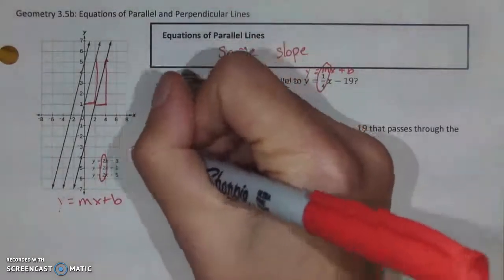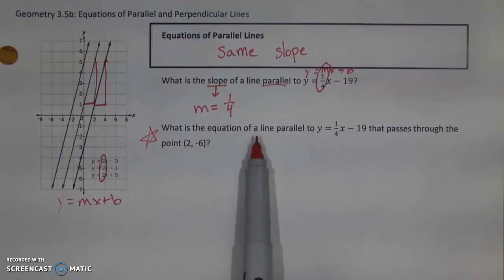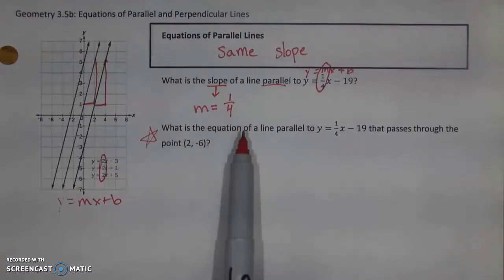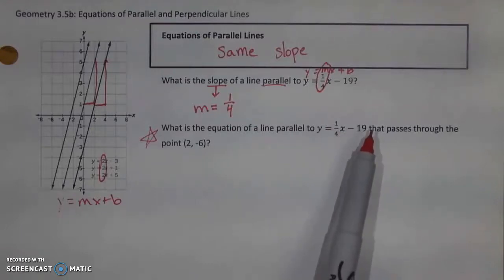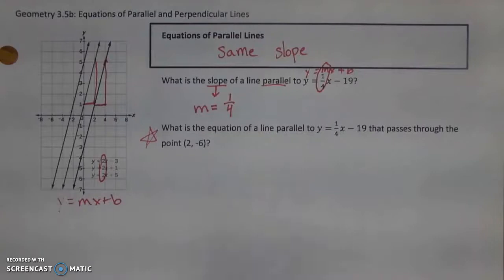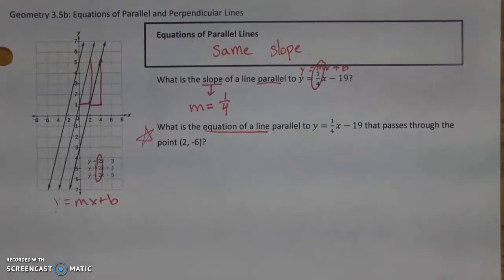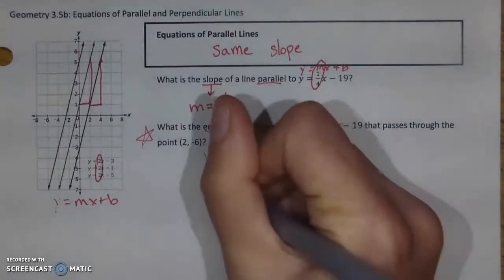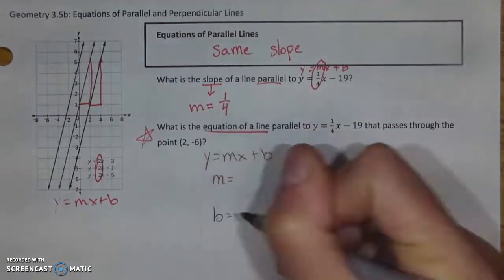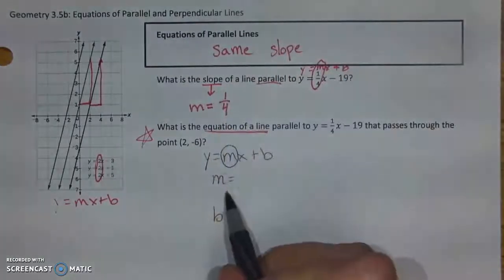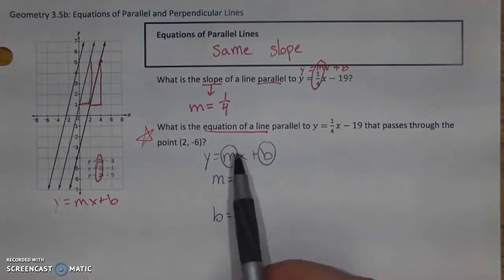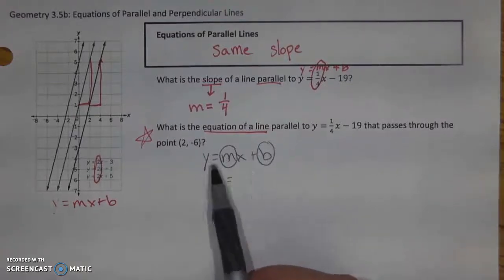Most questions are going to be a little bit harder. The stereotypical question you get with parallel lines is: find the equation of a line — not just its slope — that's parallel to y equals one-fourth x minus 19 and passes through the point (2, negative 6). I know I want the equation in the form y equals mx plus b. In order to fill in this equation, I need to find m and I need to find b, so I'll separate them as my two goals.